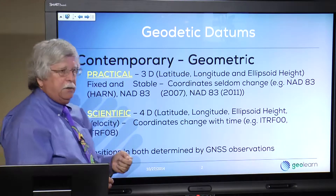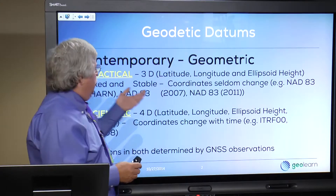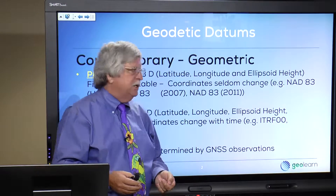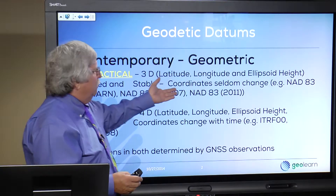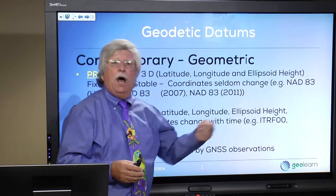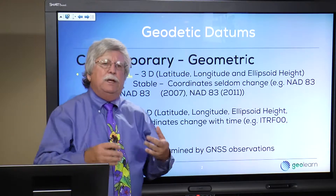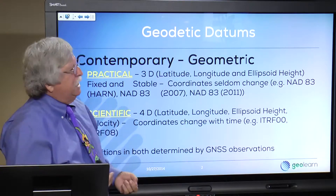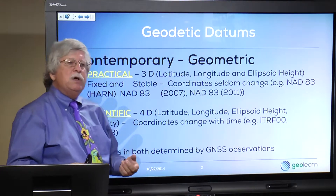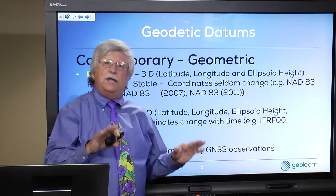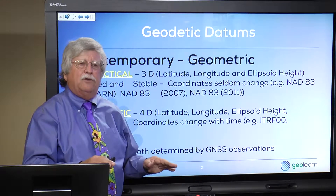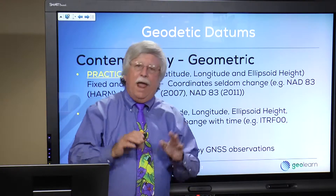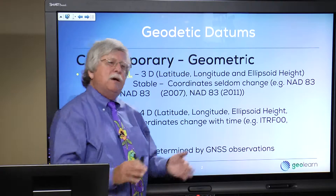One is a practical datum — coordinates collected using GPS or GNSS technology that, to the extent possible and practical, seldom change with time. Even though we know that everything is physically moving and tectonic plates are in fact in motion, we'd like to keep our coordinates as stable as possible for practical purposes, because the average day-to-day application of coordinates in the vast majority of the United States requires stability.